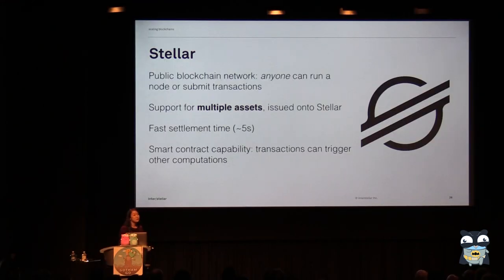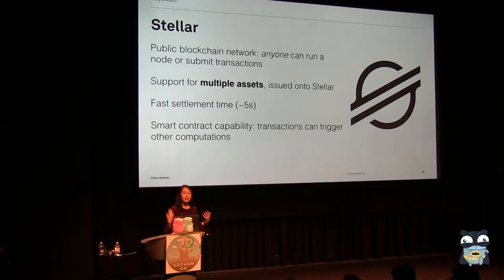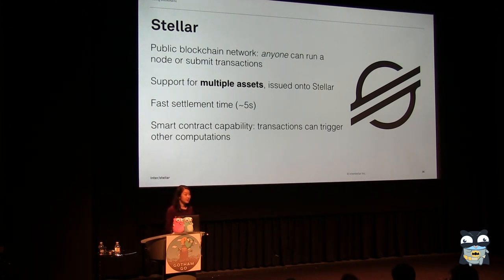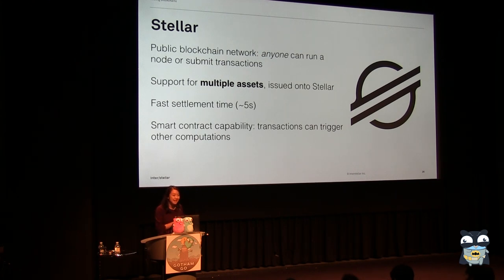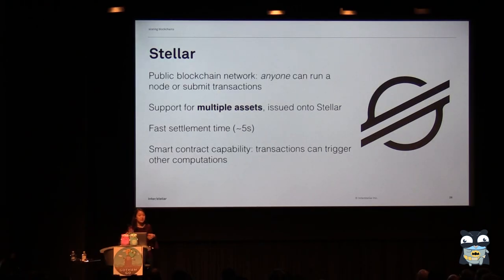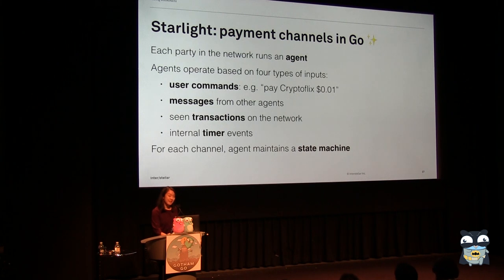Stellar has support for multiple assets, so anybody can go and issue their own assets onto the Stellar network — for example, I could issue one million Vicky coins, or financial institutions can issue backed assets. There's a pretty fast settlement time of about five seconds. And there's also some basic smart contract capability, which means that when you send transactions, you can also have nodes do additional computations as they're verifying.